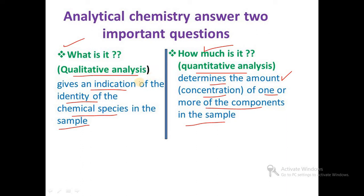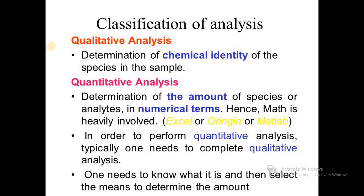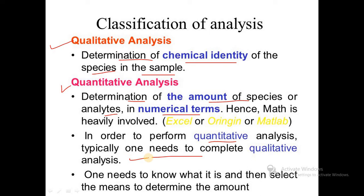There are two main classifications: qualitative analysis gives only the presence or absence of any element, while quantitative analysis gives exact weight or concentration. Qualitative analysis means determination of the chemical identity of the species present in the sample. Quantitative analysis determines the amount of species or analytes in terms of a numerical value. In order to perform quantitative analysis, one typically needs to complete qualitative analysis first — one needs to know what it is, and then select the means to determine the amount. Special techniques are used for quantitative analysis.